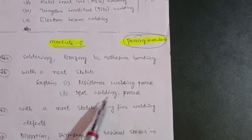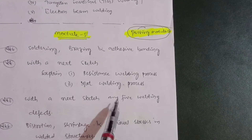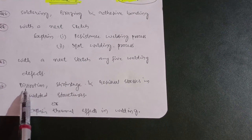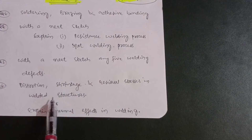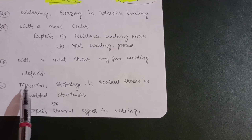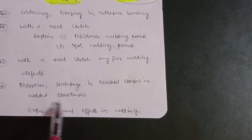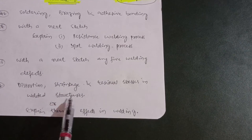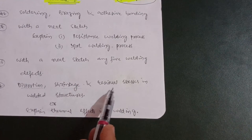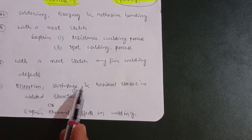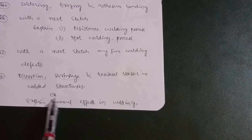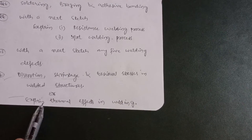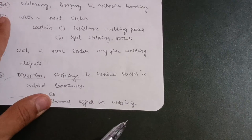Next, explain any five welding defects with a neat sketch. They may also ask about distortion, shrinkage, and residual stresses in welded structures — sometimes separately, sometimes together. You have to remember these three: distortion, shrinkage, and residual stresses in welded structures. Sometimes they phrase it as 'explain thermal effects in welding' — don't be confused, it is the same question. This is enough for Module 5.